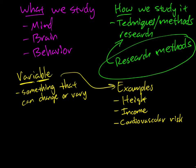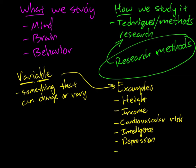Something more typically thought of as a psychological variable would be intelligence. Psychologists are very interested in why intelligence might vary from one person to the next, or what different kinds of intelligence there might be. We might similarly be interested in why some people are more depressed than others — so depression is a variable — or stress, which has a lot of very interesting research going on right now. Whatever area of psychology you're looking at, researchers are going to be looking at some kind of variable.